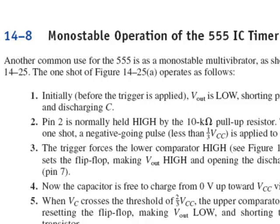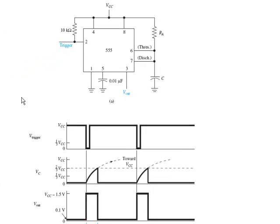Now in section 14-8, I want to show you how the 555 can be used in the monostable operation. The circuit connections and waveforms are shown in figure 14-25. The trigger is going to be applied to pin 2, and this is going to be a negative going trigger.